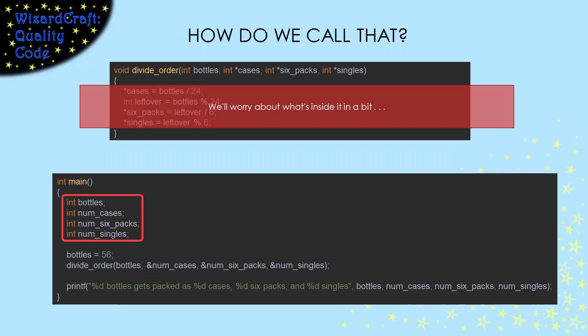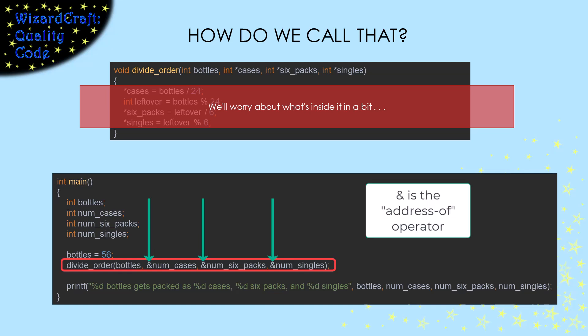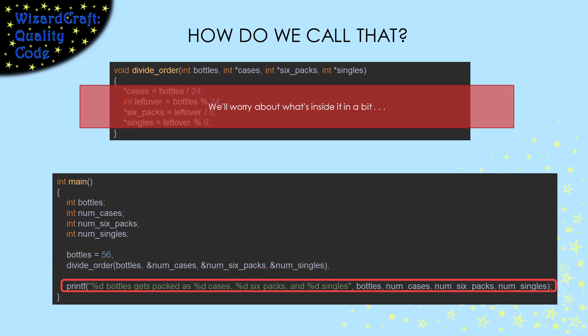In this main, I've declared four integers. I put 56 into bottles, and then I called our function. But look carefully. I've put an ampersand before each of the output parameters. Remember, that's the address of operator. So, we are passing pointers to our variables into the function. The function will chase those pointers to store the results. So, this print statement will be able to output the calculated values.